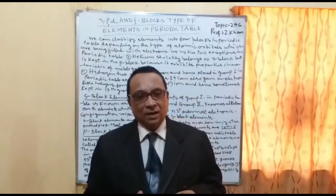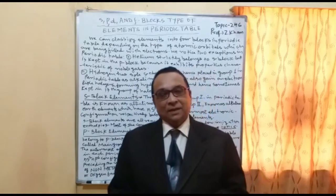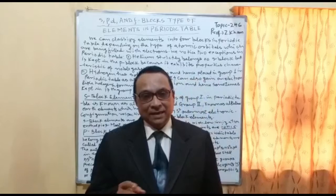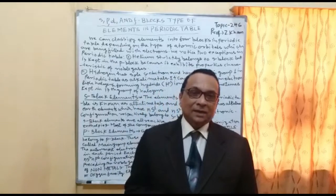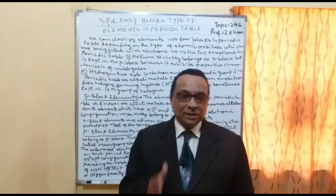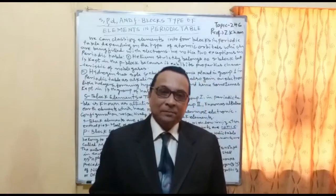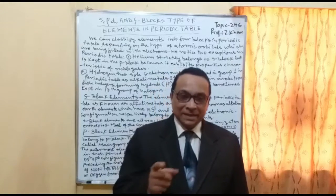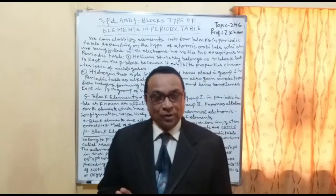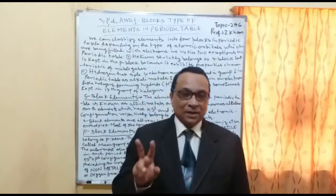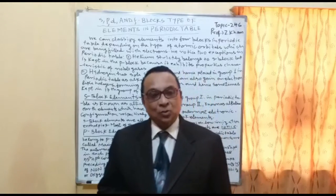If we are saying S group elements, that means electrons are placed in the S orbital, and according to that they are put in a group. For example, S1 means in the S orbital one electron is there, that's why it is called group 1. And S2 means there are two electrons in the S orbital, that's why it is called group 2.